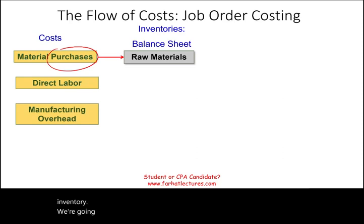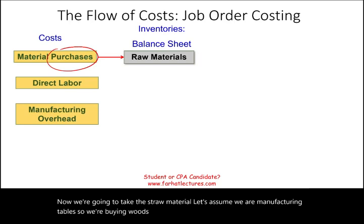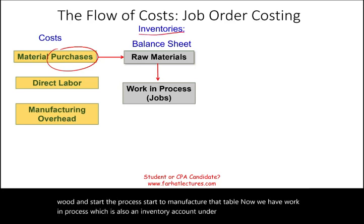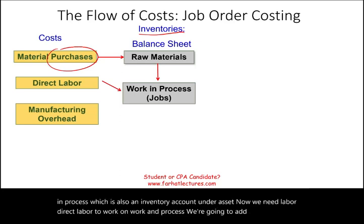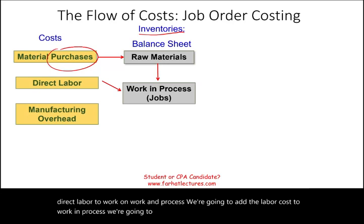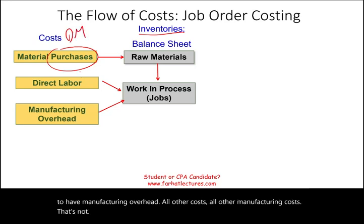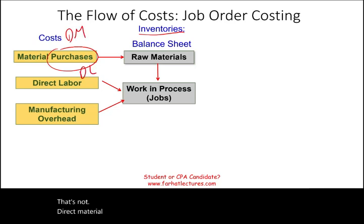We're going to take this raw material — let's assume we are manufacturing tables, buying wood as raw material. We take the wood and start to manufacture the table. Now we have work in process, which is also an inventory account under assets. We need direct labor to work on work in process, and we add the labor cost to work in process. Manufacturing overhead — all other manufacturing costs that are not direct material and not direct labor — is also added to work in process.